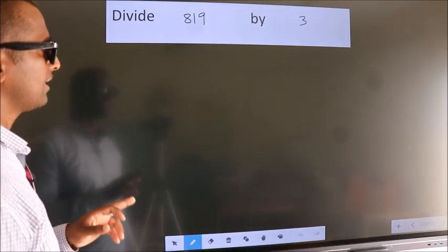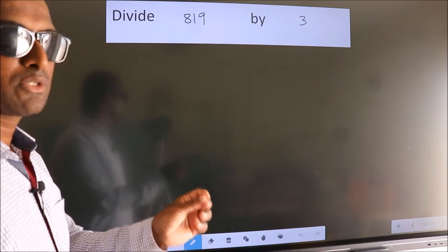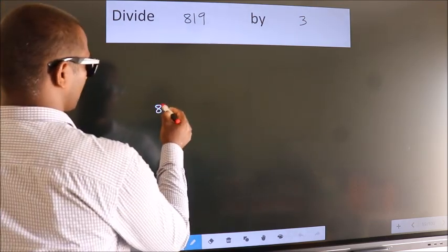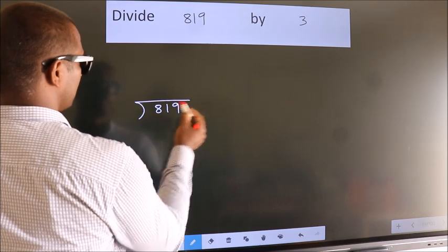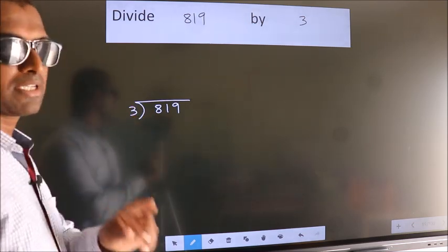Divide 819 by 3. To do this division, we should frame it in this way. 819 here, 3 here. This is your step 1.